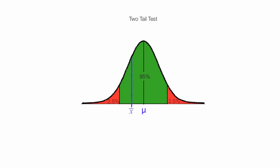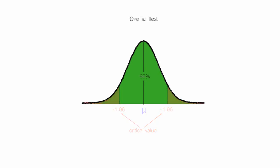There is 2.5% on the left and 2.5% on the right — 2.5% plus 95% plus 2.5% equals 100%, meaning all observations and all events are covered. There is a 95% chance the sample mean will be in the green area, a 2.5% chance it will be in the bottom tail, and a 2.5% chance it will be in the upper tail. At a 95% level, the critical values are z-scores: negative 1.96 on the left and positive 1.96 on the right. For a one-tail test, the critical value is positive 1.645 on the right or negative 1.645 on the left.